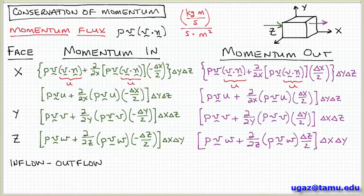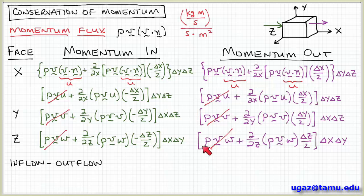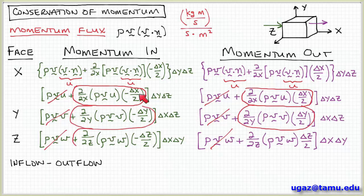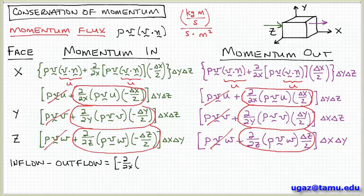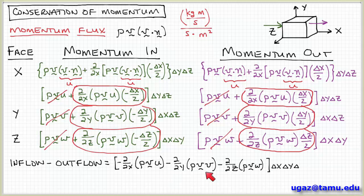Taking inflow minus outflow gives the net flow into the system. Again the center-value terms cancel out: rho v u cancels with rho v u, rho v v cancels with rho v v, and rho v w cancels with rho v w. The remaining terms combine, giving minus partial with respect to x of rho v u, minus partial with respect to y of rho v times scalar v, minus partial with respect to z of rho v times w, all times delta x delta y delta z.